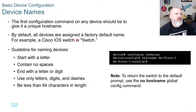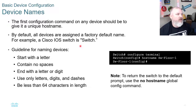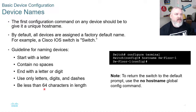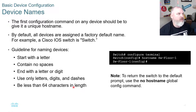By default, all devices are assigned a factory default name — on Cisco IOS it's either 'switch' or 'router.' Real unique, right? So the guidelines: the hostname needs to start with a letter, contain no spaces, end with a letter or digit, use only letters, digits, or dashes, and be less than 64 characters in length. Those are the rules of the road for hostnames.